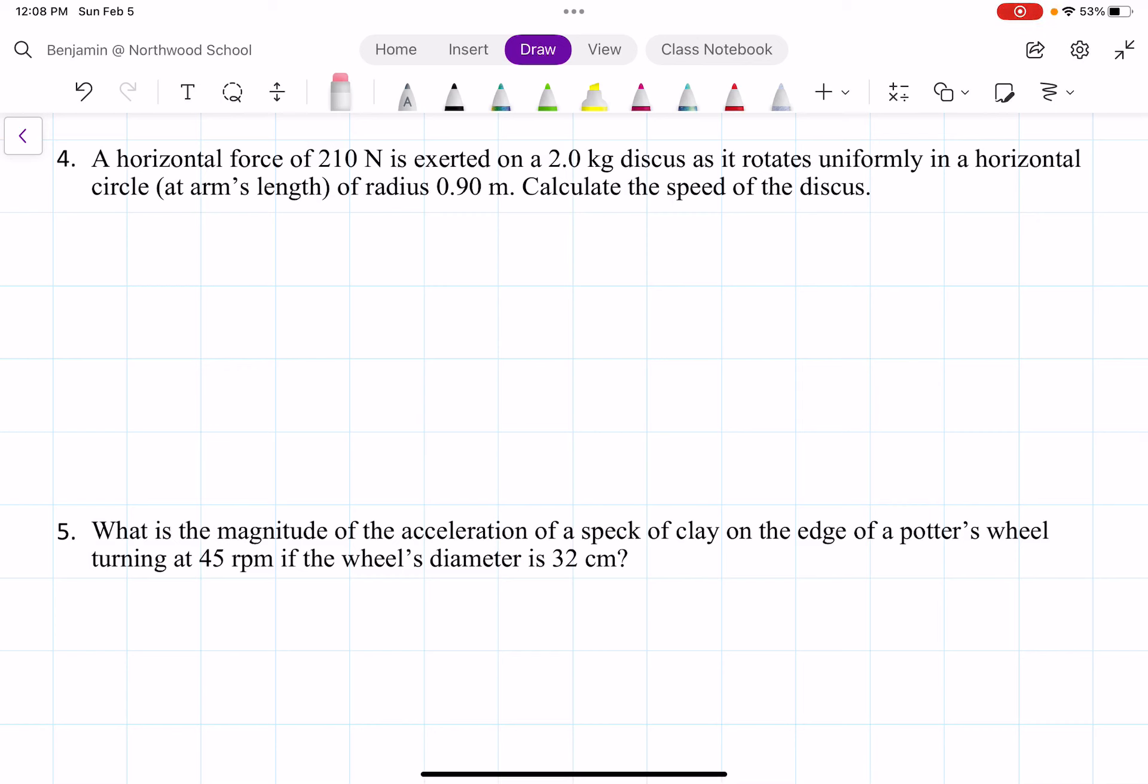For this problem, we have a horizontal force of 210 newtons exerted on a 2-kilogram discus as it rotates uniformly in a horizontal circle at arm's length of radius 0.9. We just want to calculate the speed of the discus.